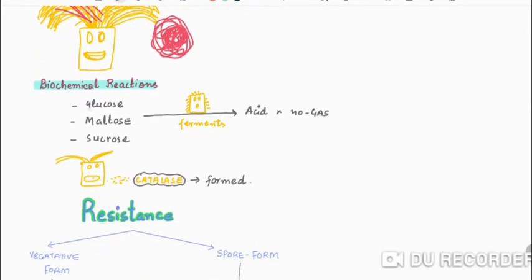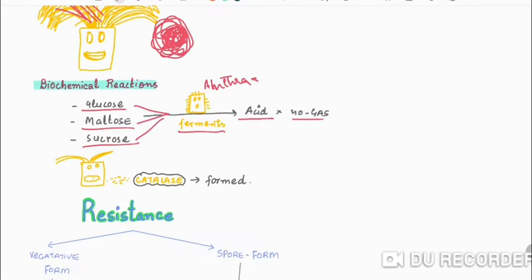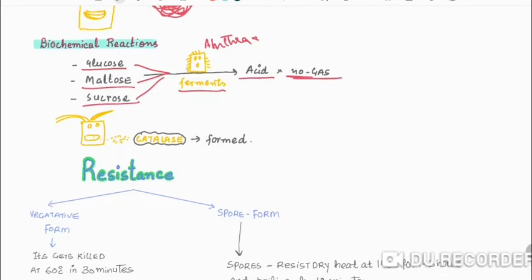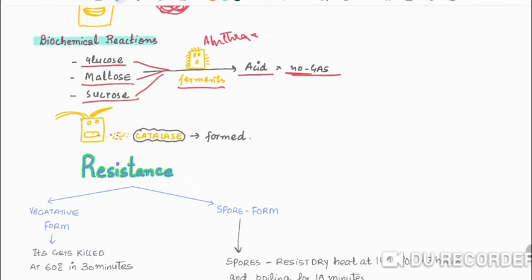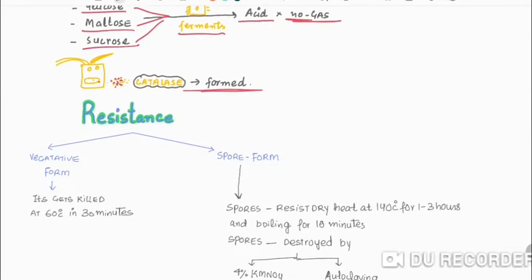In biochemical reactions, Bacillus anthrax ferments glucose, maltose, and sucrose with acid production but no gas. It also secretes catalase, giving a positive catalase reaction.